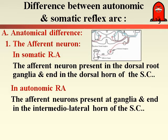This reflex arc is also present in the somatic nervous system. For example, if you put your hand on a hot plate, the high temperature or pain sensation produces reflex contraction of the hand and you pull it away. So both the somatic nervous system and the autonomic nervous system have reflex arcs, but there are differences between them — some anatomical and some functional. In the autonomic reflex arc, the sensory nerve fiber ends on the lateral horn instead of the dorsal horn as in the somatic reflex arc.